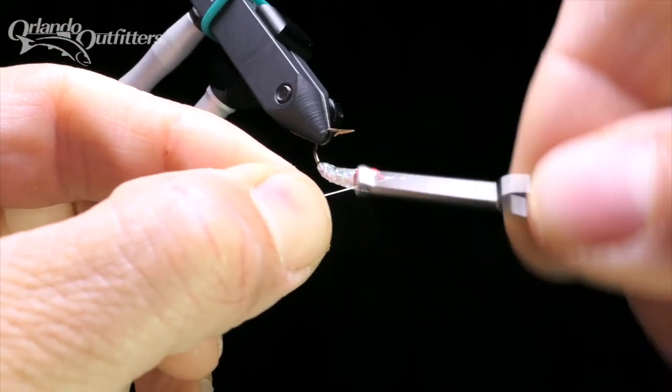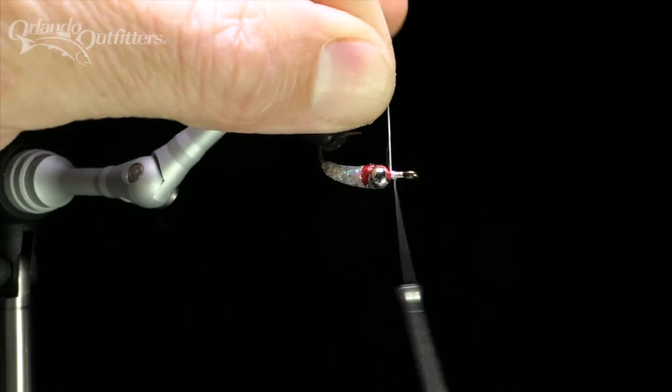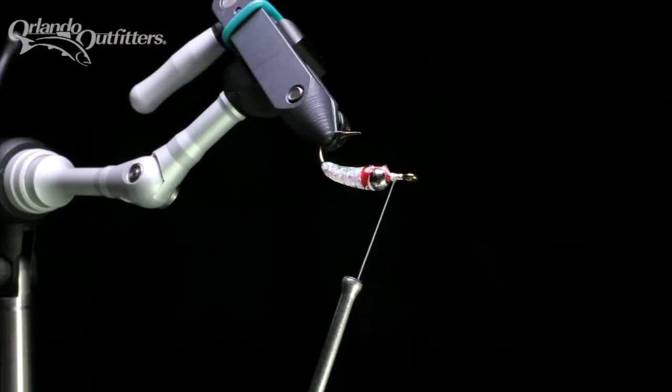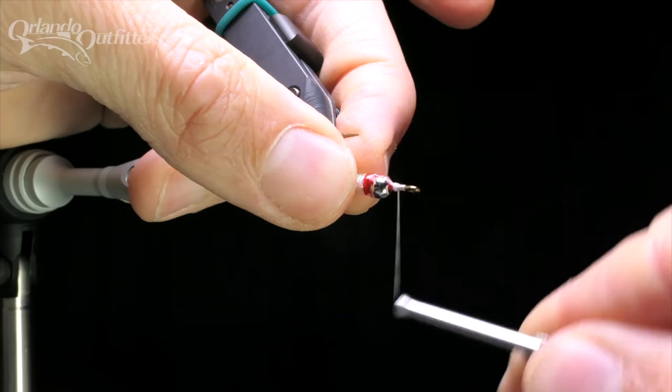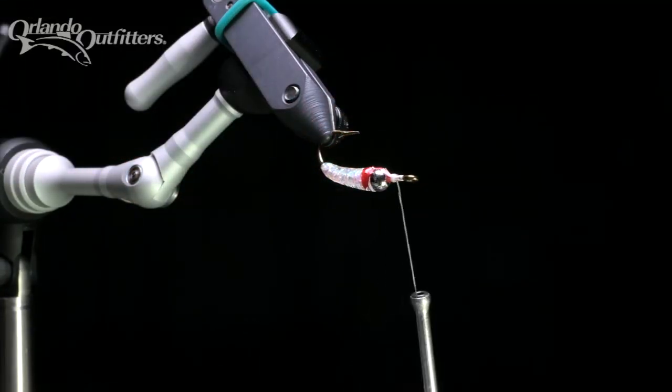Attach the white thread in front of the bead, then trim the tag end. I like to use a strong, thin thread, like Vivas 140 denier, to keep from building up the head too much.